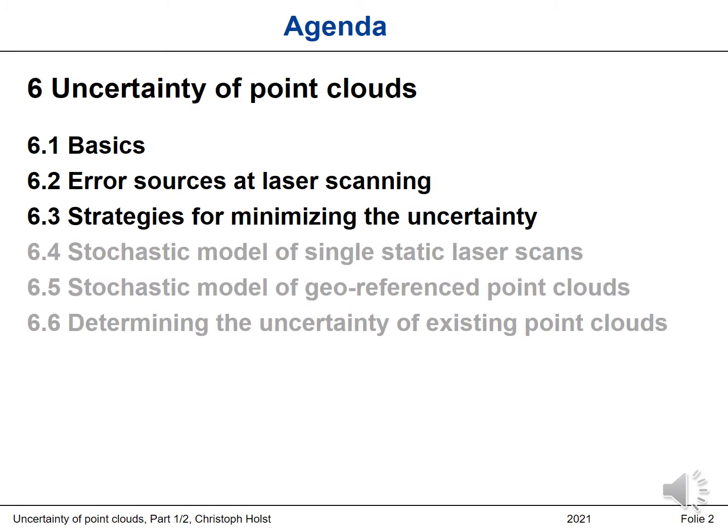Until now in this lecture series, you heard a lot about how to acquire a point cloud based on a mobile mapping system. We have a laser scanner which moves during the capturing of the surrounding, most probably a profile laser scanner. During this movement, we can capture the whole surrounding, maybe along a street. Now we care about how we can say something about the uncertainty of this point cloud. This will be the topic of chapter six: uncertainty of point clouds.